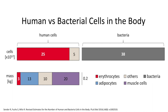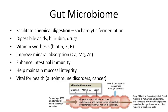Bacteria in the human body actually make up roughly half of the cells in our body, which can be seen on this picture comparing the number of human cells and bacterial cells, which is very shocking. Bacteria therefore participate in chemical digestion, specifically saccharolytic fermentation, or breaking down of remaining carbohydrates.